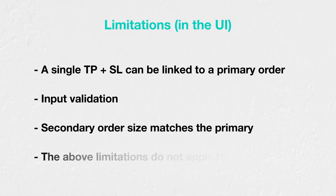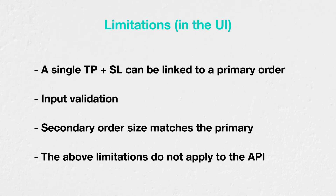The API, however, does not have these protections in place, so it is possible to create more exotic combinations — for example, more than two secondary orders per primary order. However, it is also easier to create combinations that would lead to undesirable behavior, such as a stop-loss that, due to the prices chosen, would always immediately close the position as soon as it is opened.